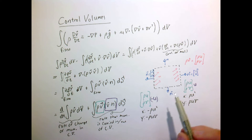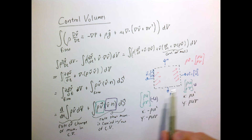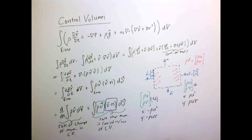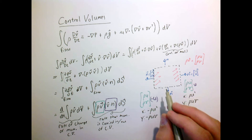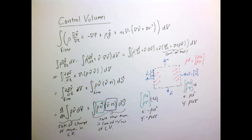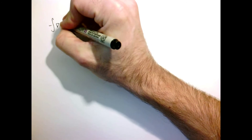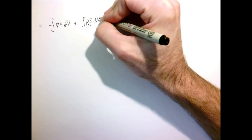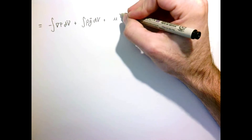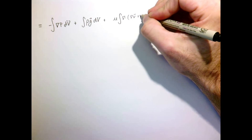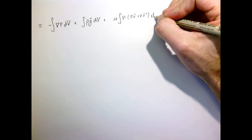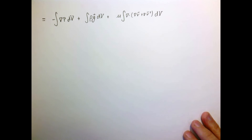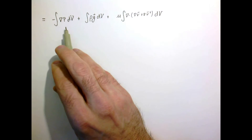However, if the velocity field is changing, we could have more momentum coming in on the left or the right, and the term would be positive or negative depending on which is greater. Now let's look at the right-hand side of the Navier-Stokes equation. We have three forces: the pressure, gravity, and viscous forces.